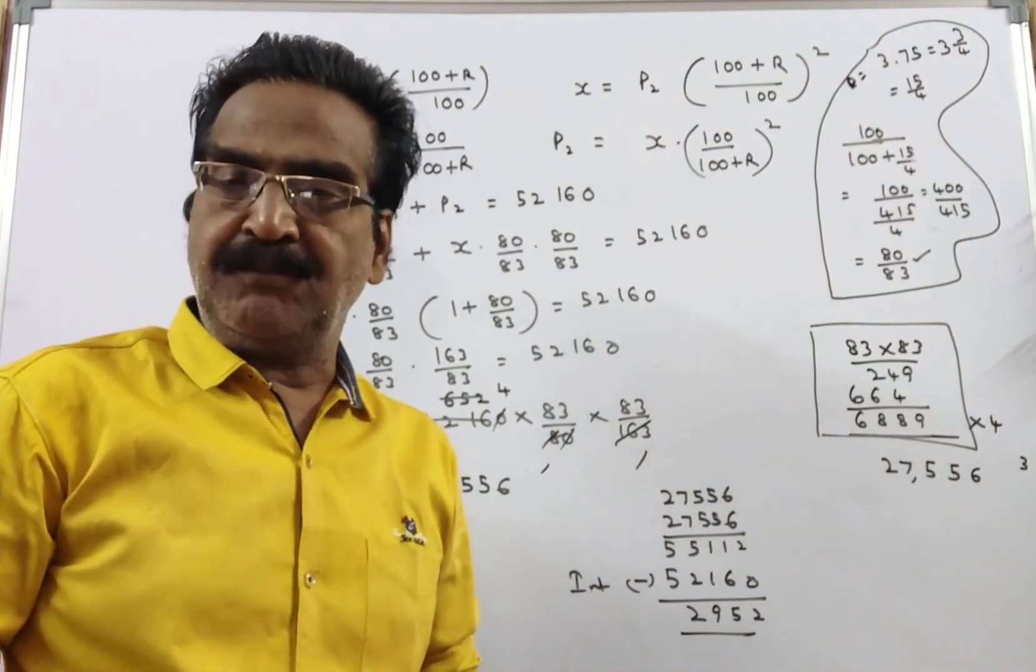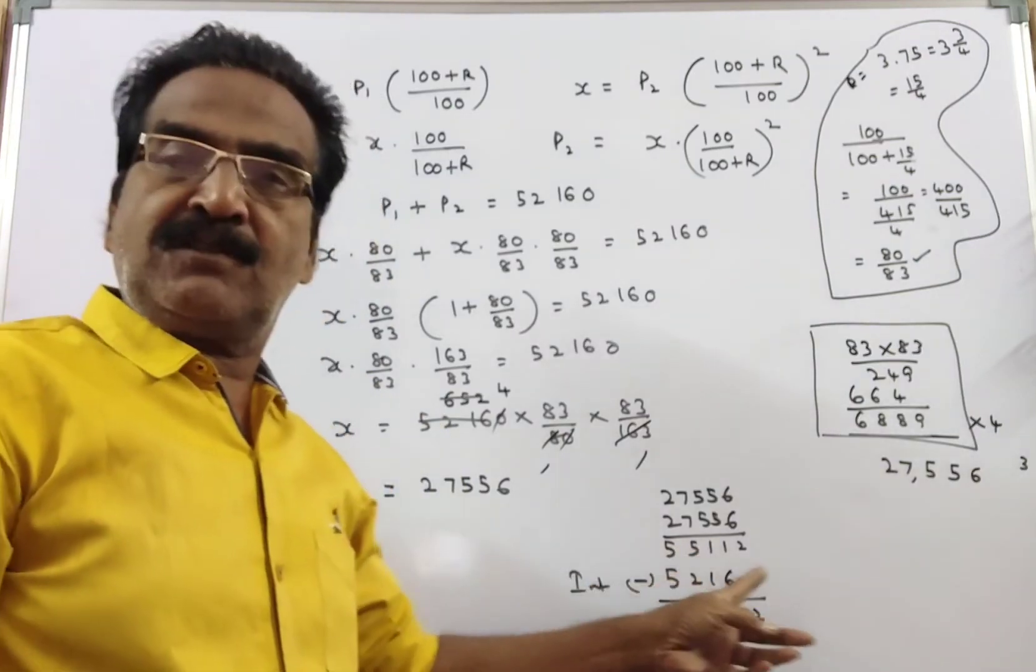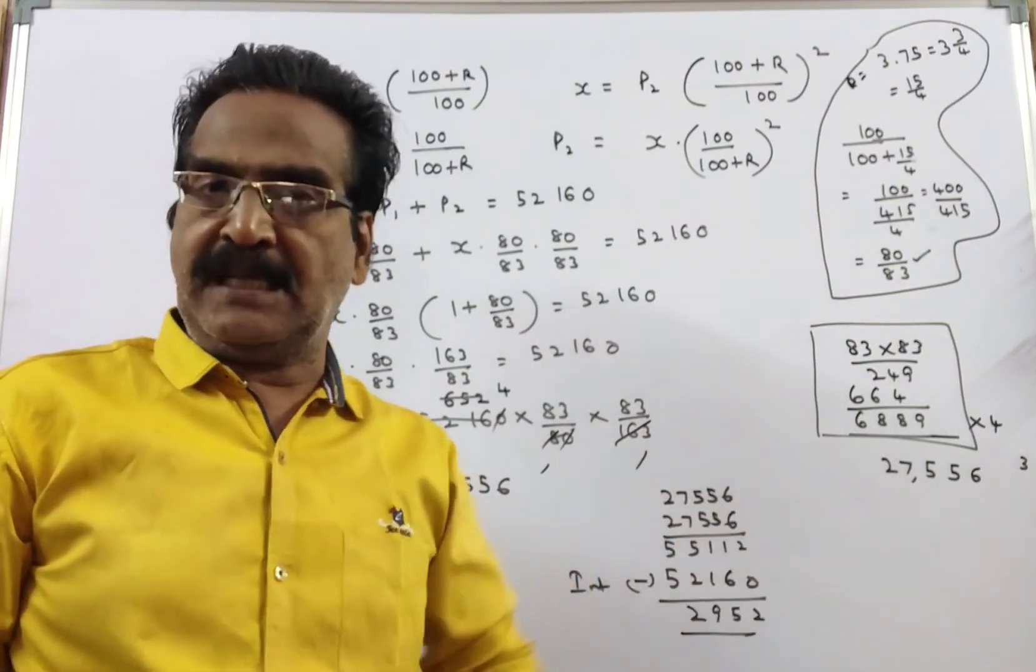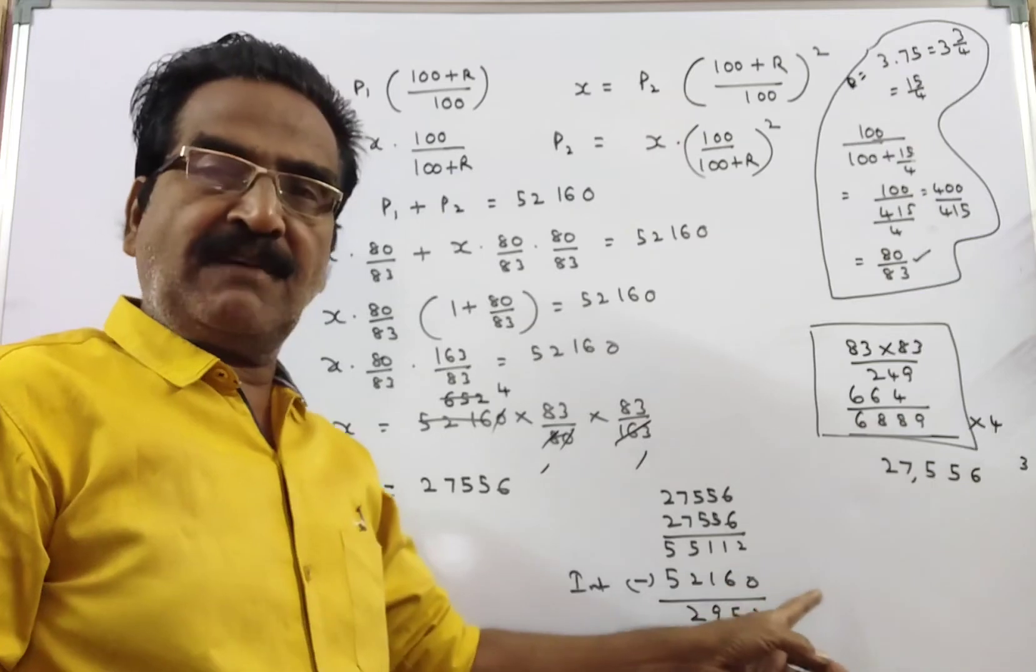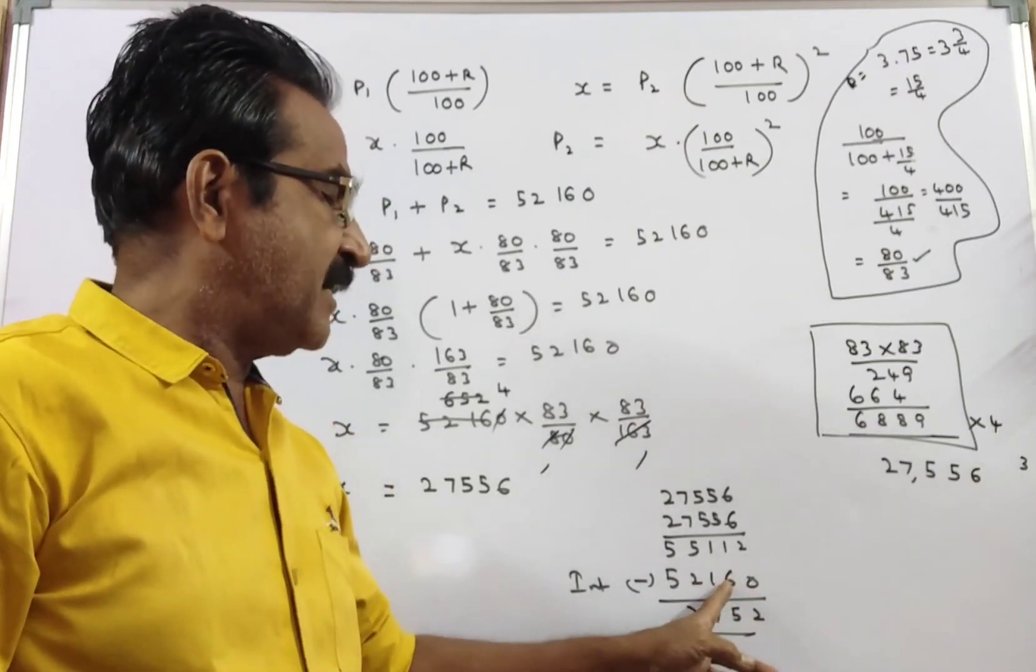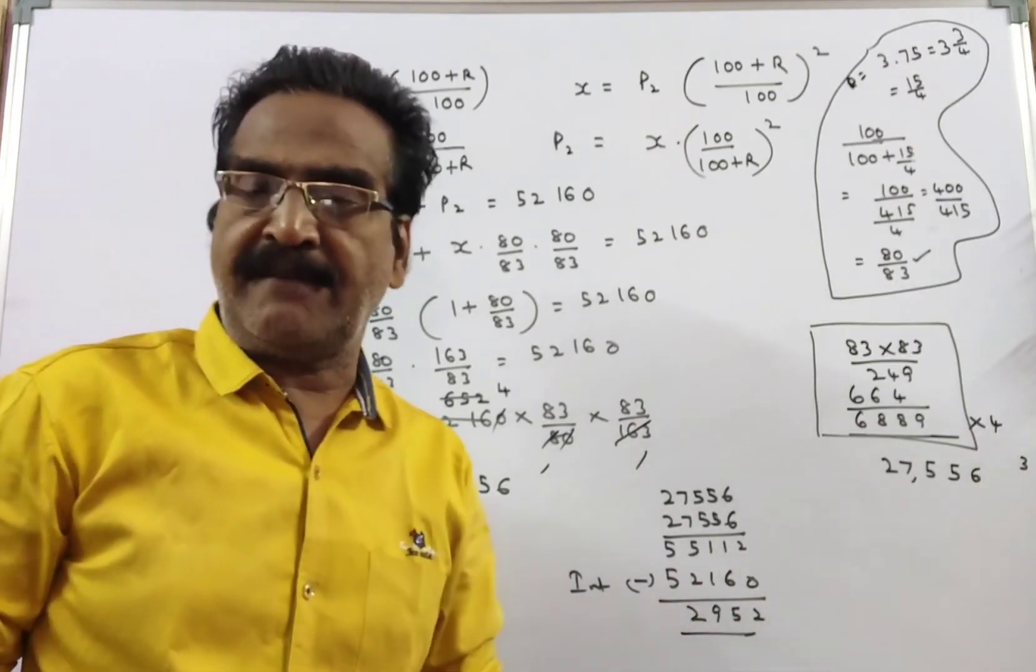So the total paid is 55,112, of which the principal is 52,160. The difference is 2,952.